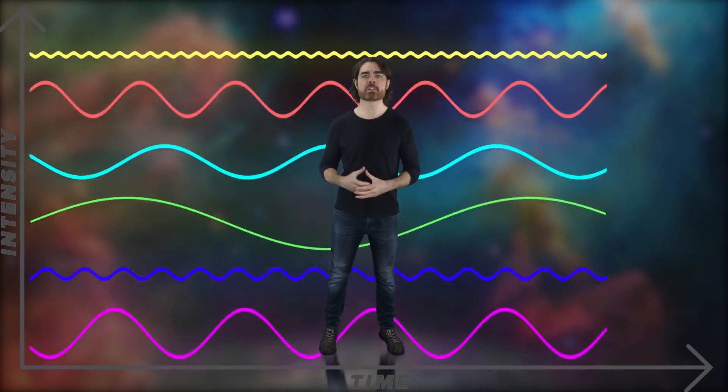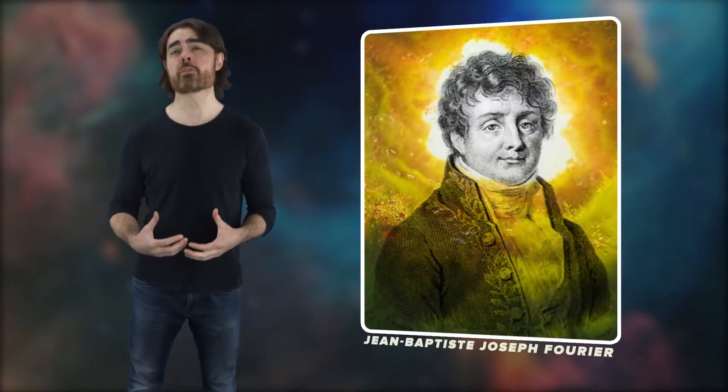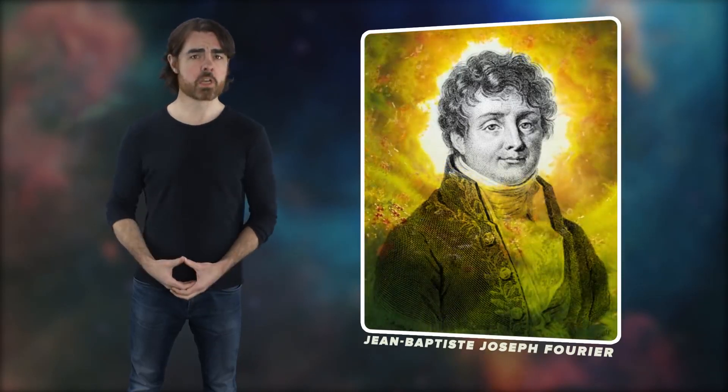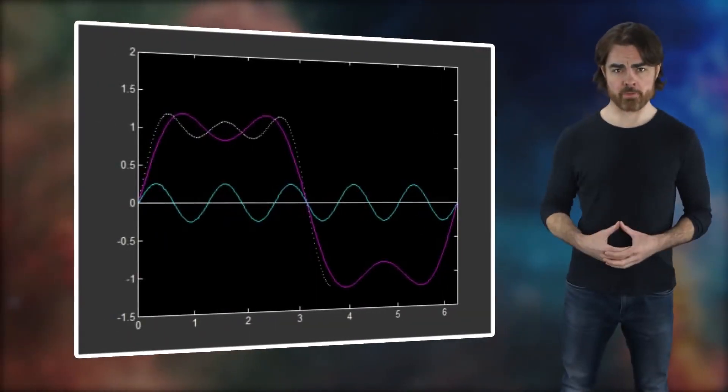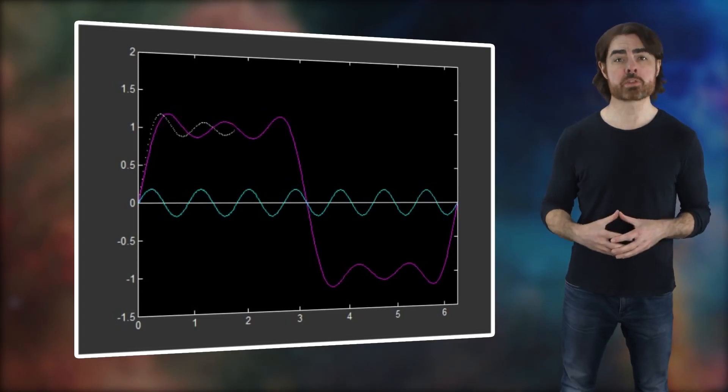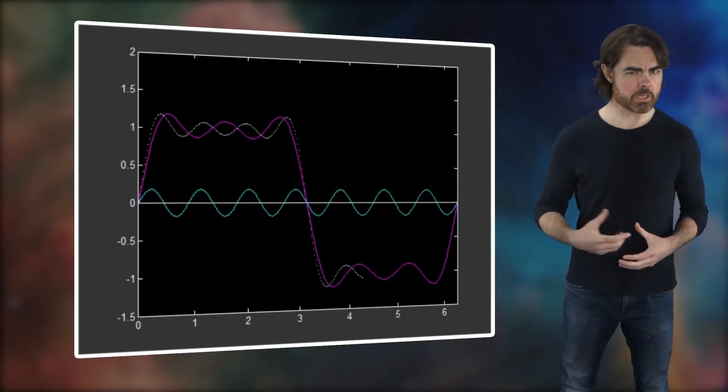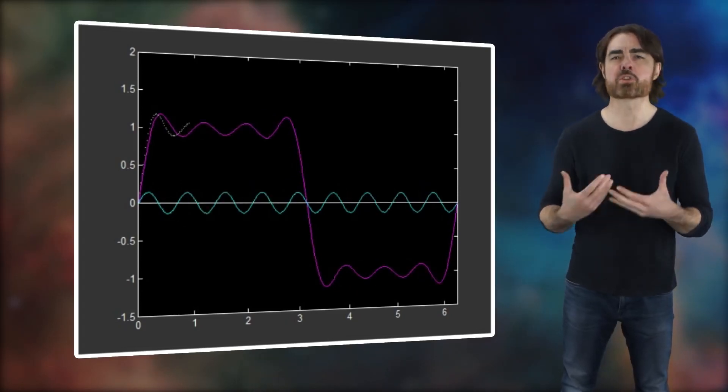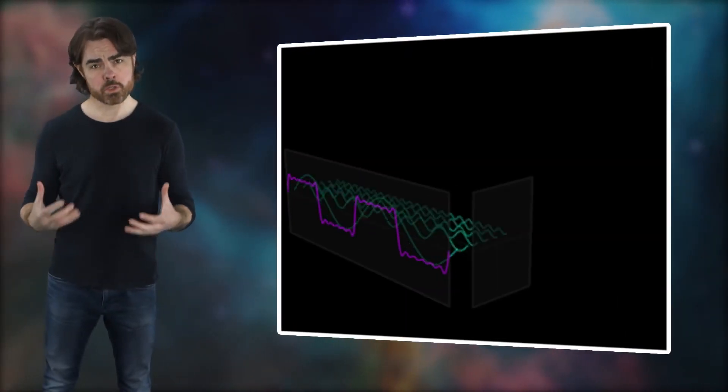The sound wave from, say, an orchestra is extremely complex. But amazingly, it can always be broken down into a combination of many simple sine waves of different frequencies. This is Fourier's theorem, after French mathematician Jean-Baptiste Joseph Fourier. It states that any complex sound wave can be decomposed into a number of sine waves of different frequencies, each with a different strength, stacked on top of each other, or superposed.